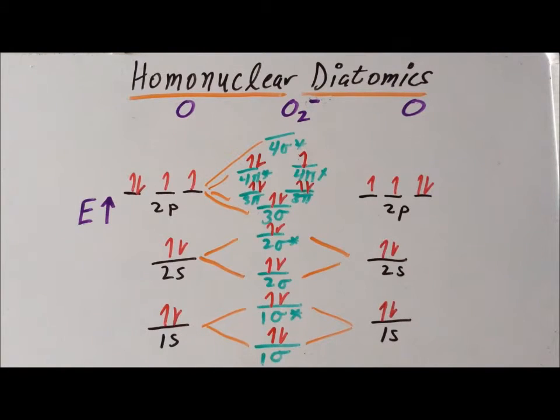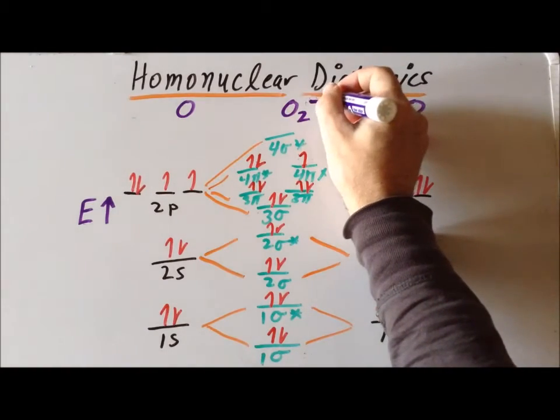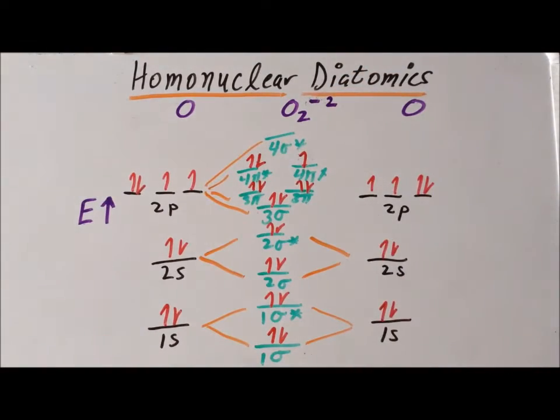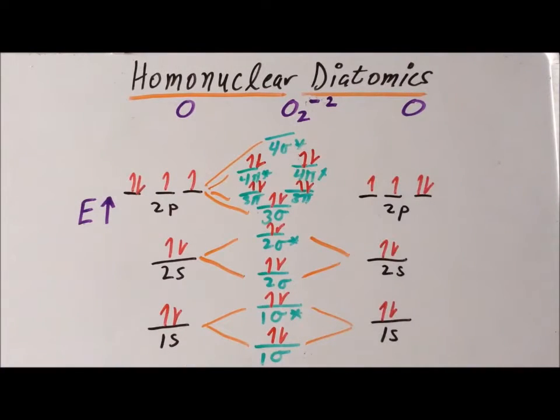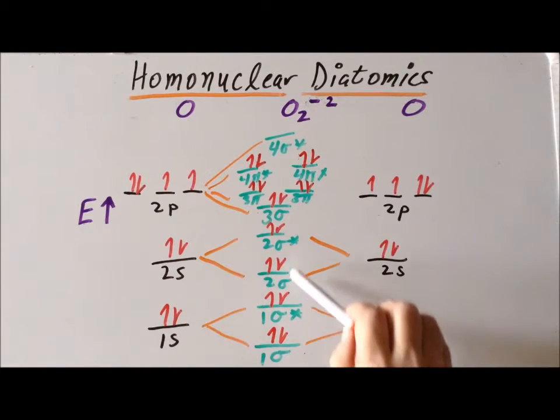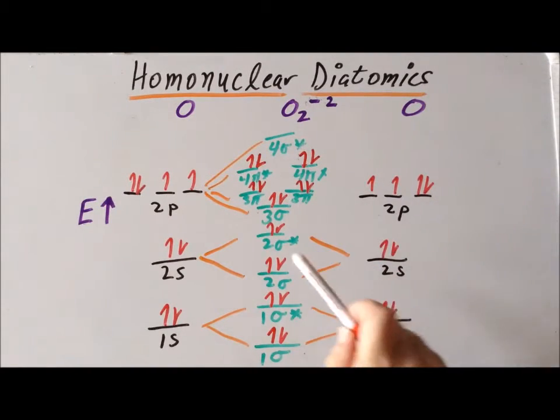And for one last example, what do we get if we added two electrons to dioxygen? So, now we form the peroxide ion. If we add in the last electron that we've added there, we have now filled up the 4 pi star levels. And let us now see what the bond order for this species is. The number of bonding electrons is 2, 4, 6, 8, 10. The number of antibonding electrons is 2, 4, 6, 8. 10 minus 8 equals 2 divided by 2 gives us a bond order of 1.